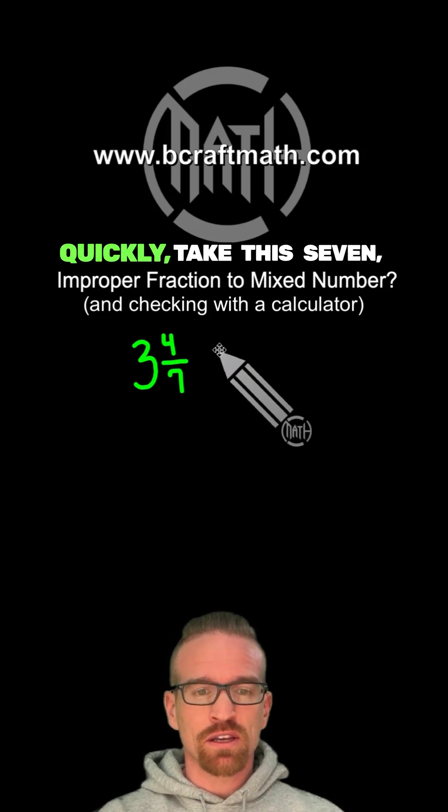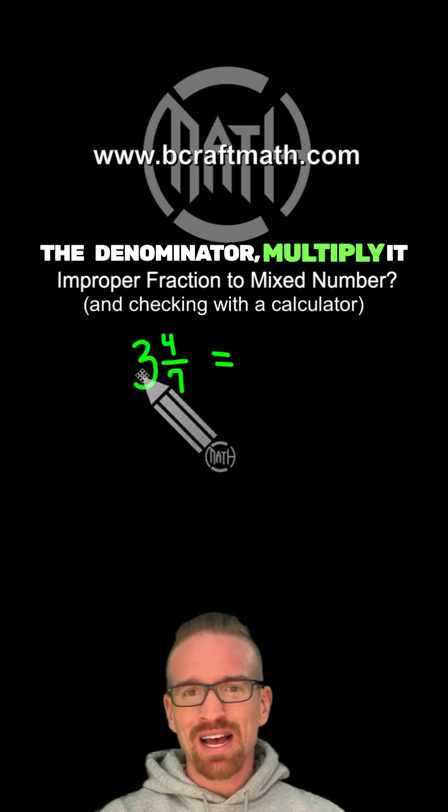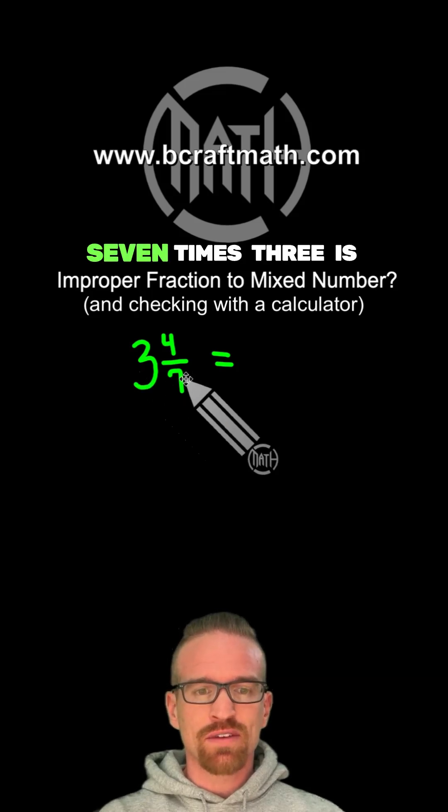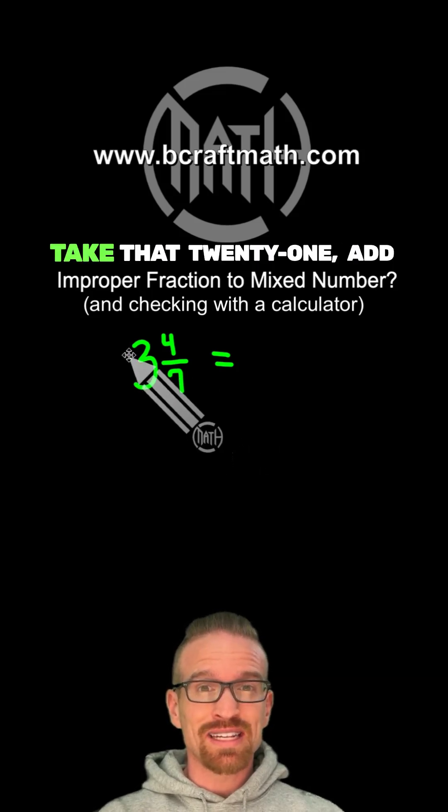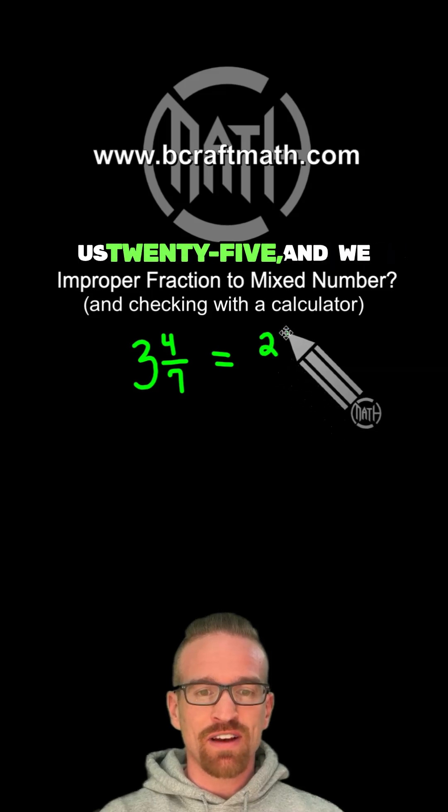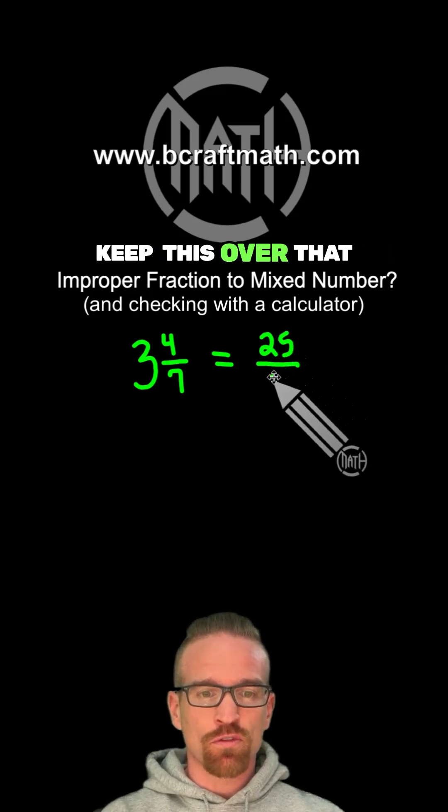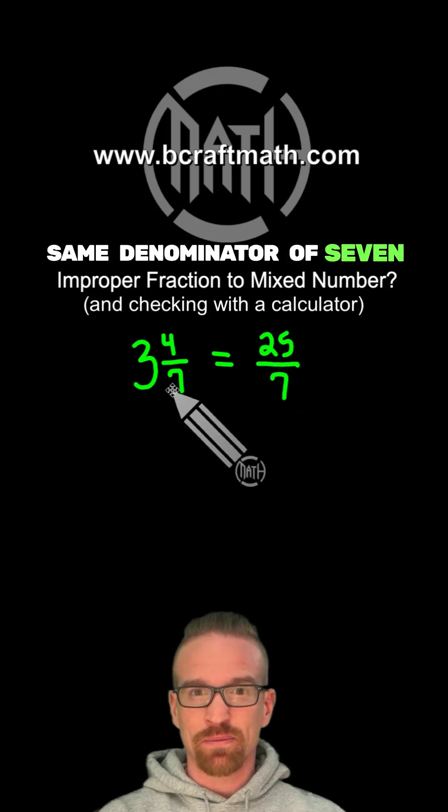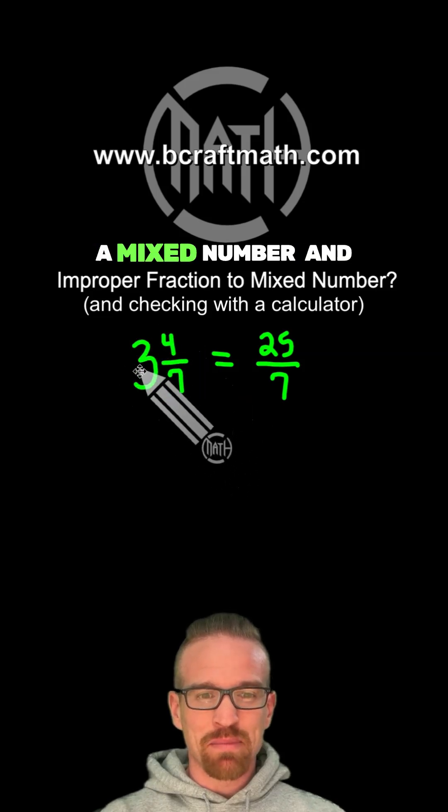To do that very quickly, take this 7, the denominator, multiply it by the big number out here. 7 times 3 is 21. Take that 21, add that numerator, that gives us 25, and we keep this over that same denominator of 7.